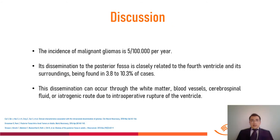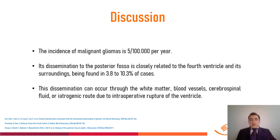Discussion: The incidence of malignant gliomas is 5 per 100,000 per year. Dissemination to the posterior fossa is closely related to the fourth ventricle and its surroundings, being found in 3.8 to 10.3 percent of cases. This dissemination can occur through the white matter, blood vessels, cerebrospinal fluid, or via an iatrogenic route due to intraoperative rupture of the ventricle.